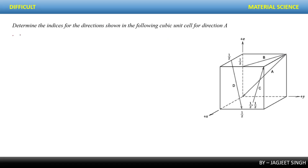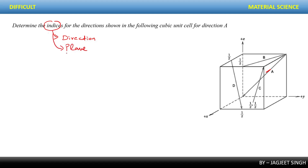Let's start with the first question: determine the indices for the direction shown in the following cubic unit cell for direction A. Here you can see many directions are given — direction D, C, A, B. You have to calculate the Miller indices for direction A. Miller indices are coordinates discovered by Miller, and there are two types: one for direction and one for plane.